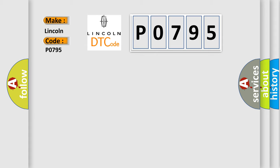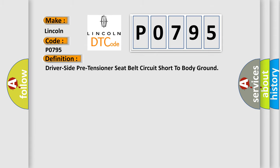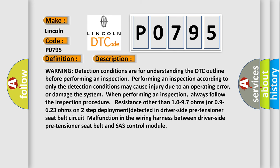Lincoln car manufacturers. The basic definition is: Driver side pre-tensioner seat belt circuit short to body ground. This is a short description of this DTC code. Warning: detection conditions are for understanding the DTC outline before performing an inspection. Performing an inspection according to only the detection conditions may cause injury due to an operating error, or damage the system. Always follow the inspection procedure. Resistance other than 10-97 ohms or 09-623 ohms on two-step deployment detected in driver side pre-tensioner seat belt circuit indicates a malfunction in the wiring harness between the driver side pre-tensioner seat belt and the chassis control module. This diagnostic error occurs most often in these cases.